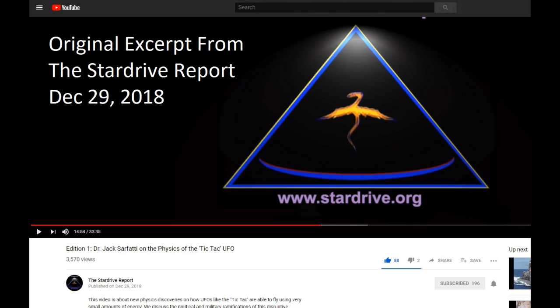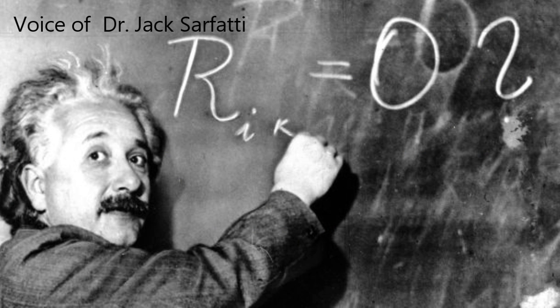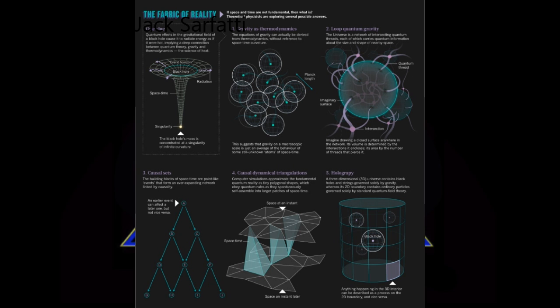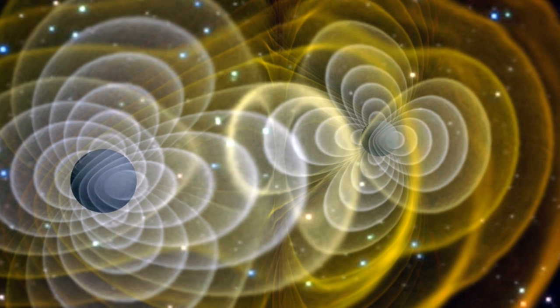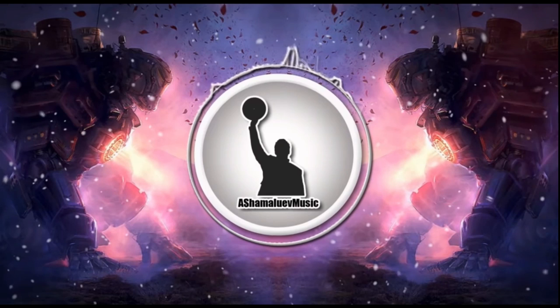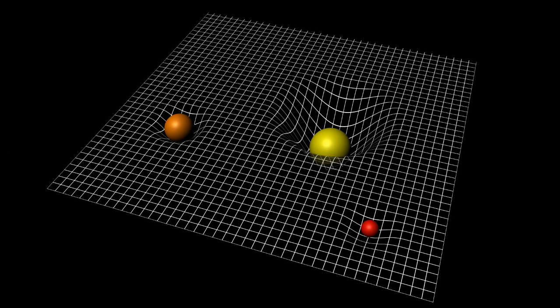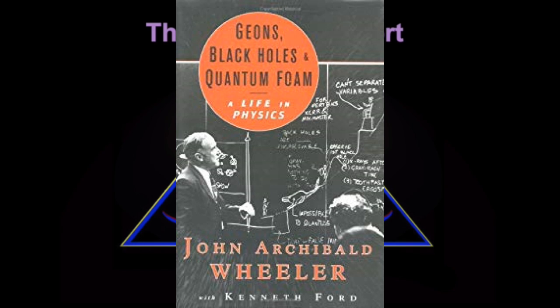Hal Puthoff has called this new technology metric engineering because in Einstein's theory of gravity, called general relativity, spacetime is also called the metric field. Albert Einstein showed that space and time fuse together into a field similar to the electromagnetic field. It's also called by John Wheeler the geometrodynamic field.